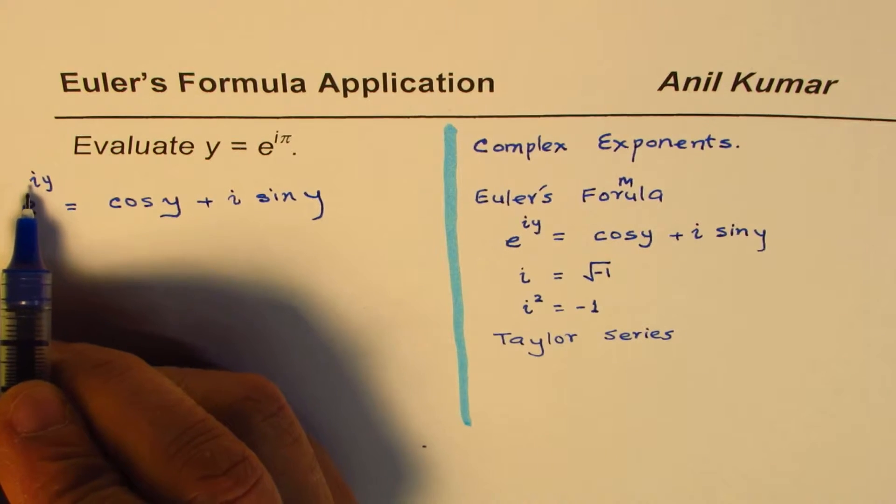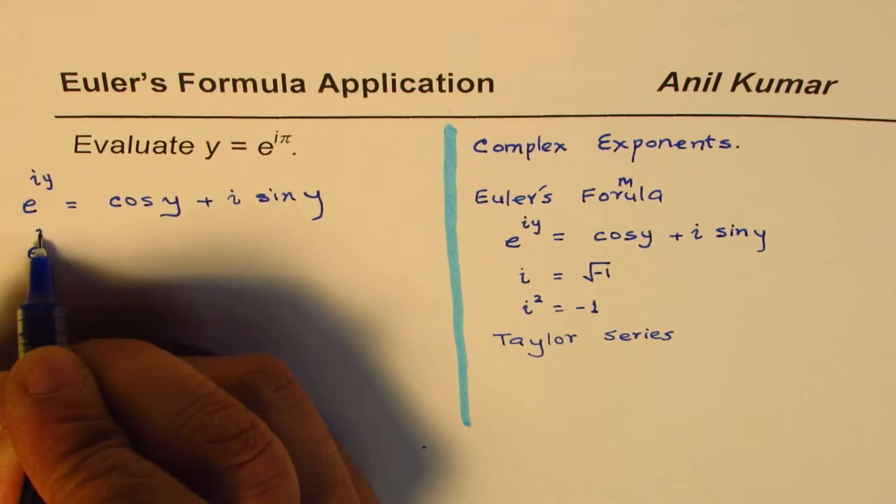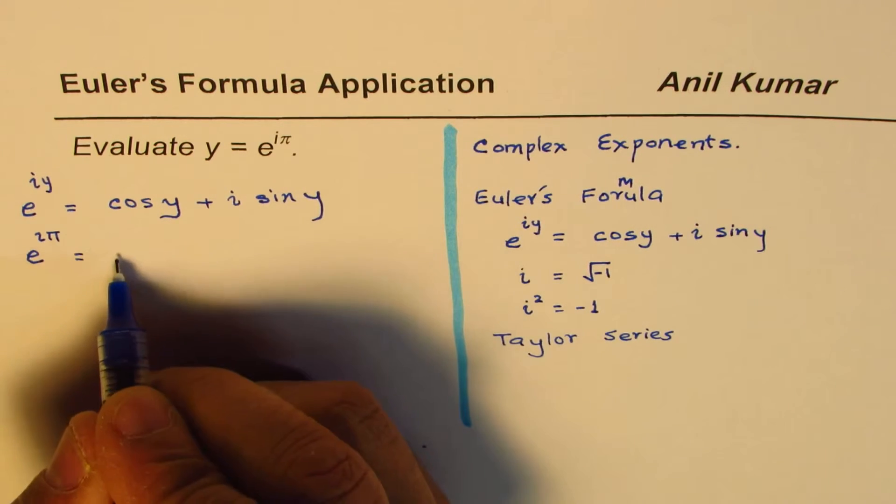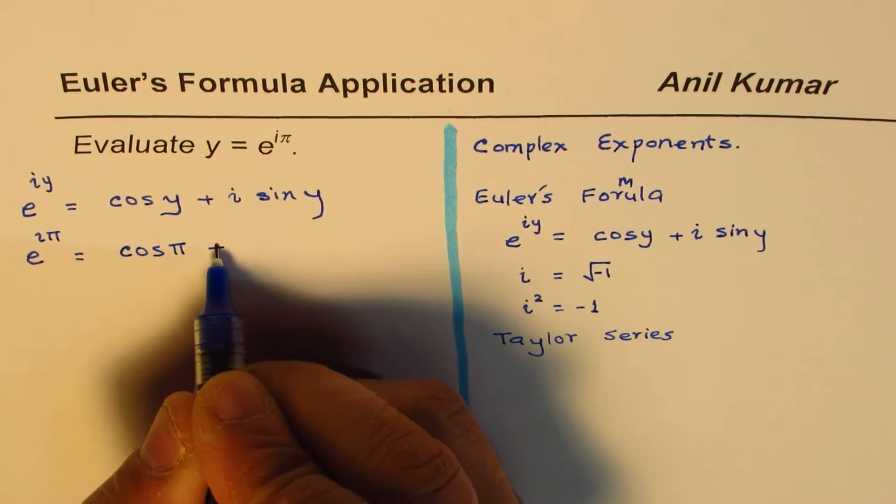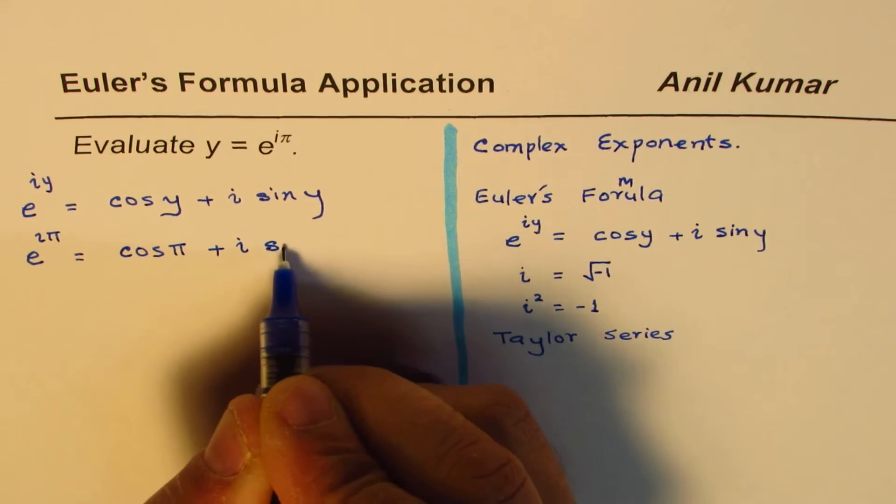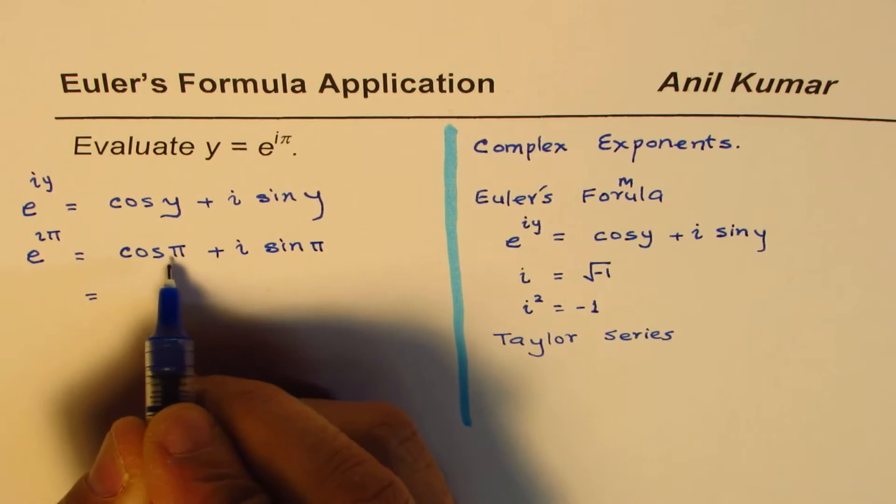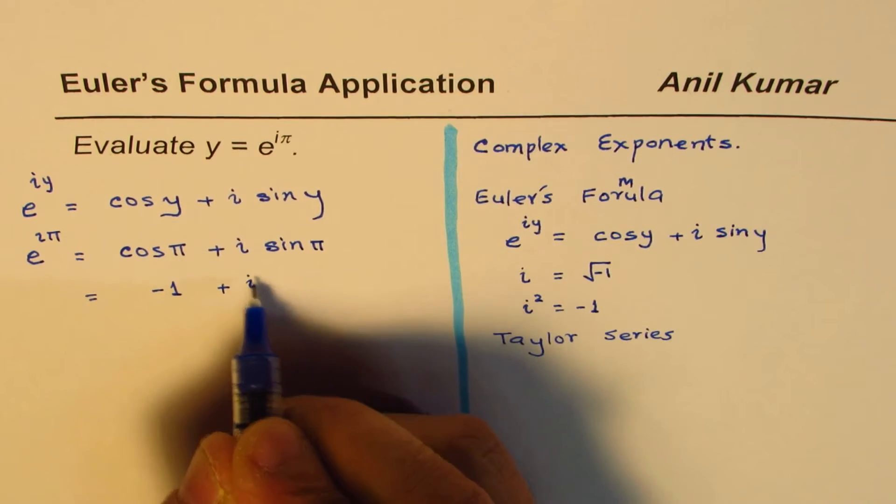Now, you can see the exponent is i y. Now I am going to replace y with pi. So we want to find what is e to the power of i pi. We will replace this y with pi. So what we get here is cos of pi plus i sine of pi. Now, cos of pi is negative 1 and sine of pi is 0.